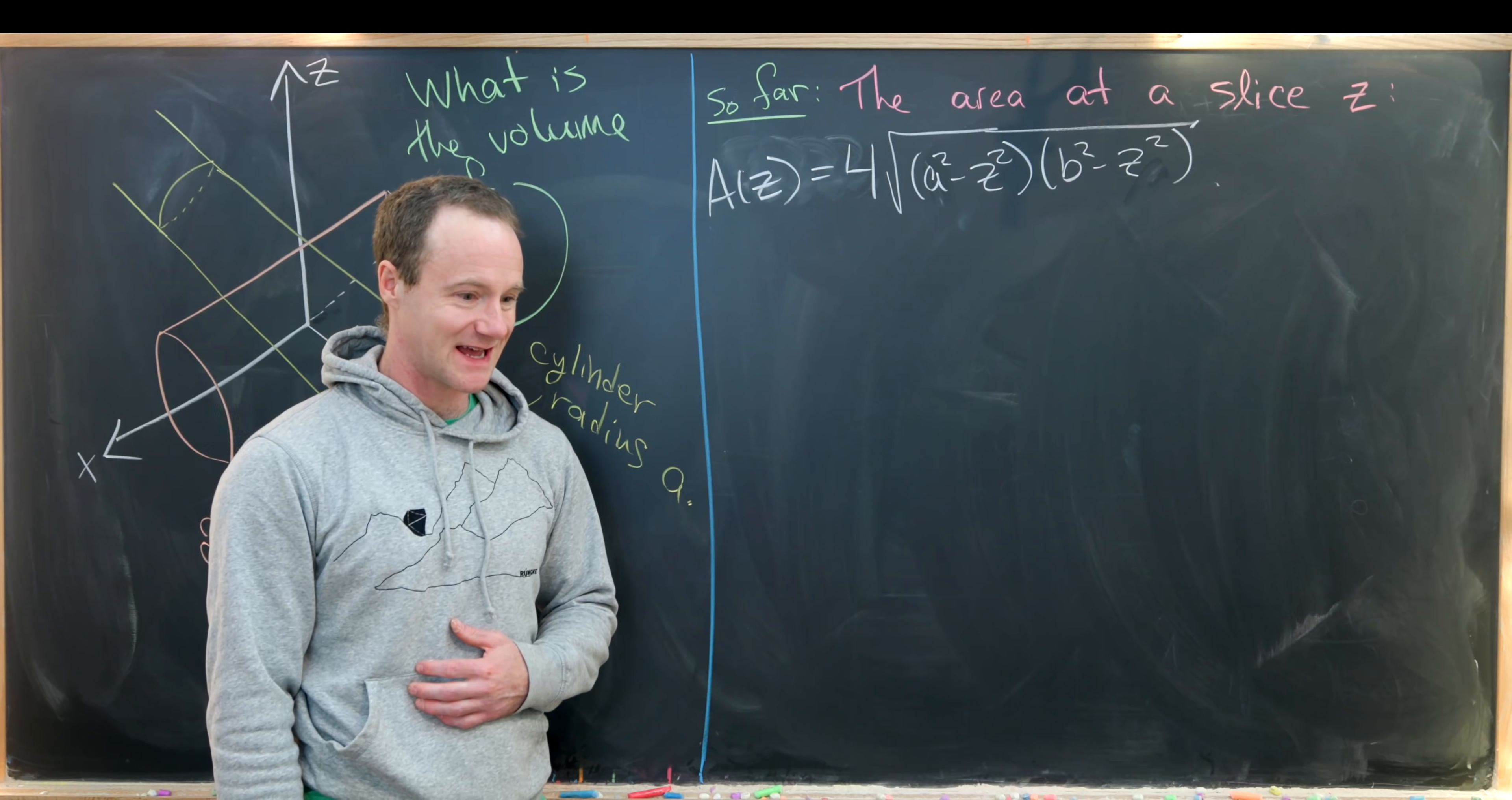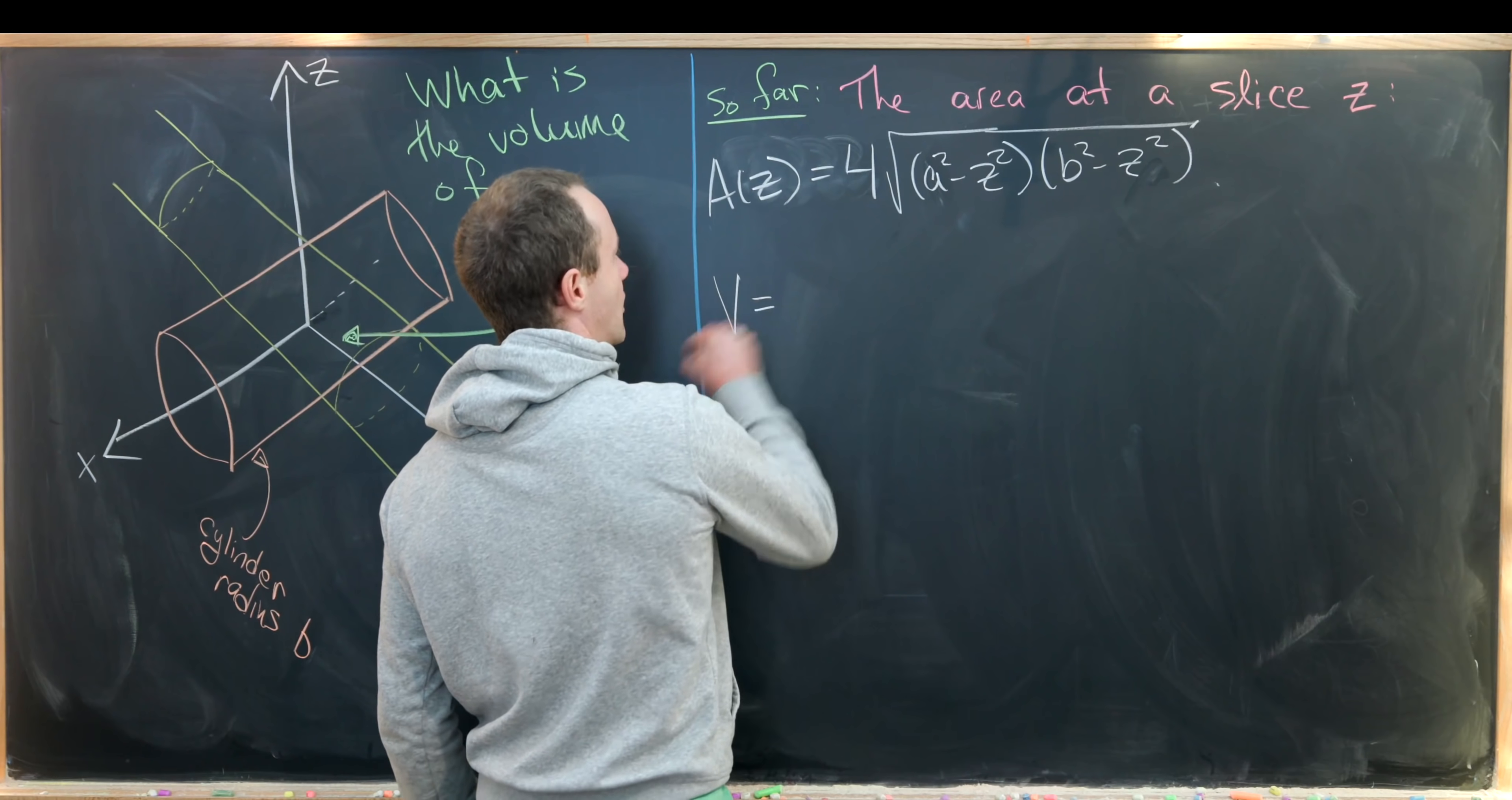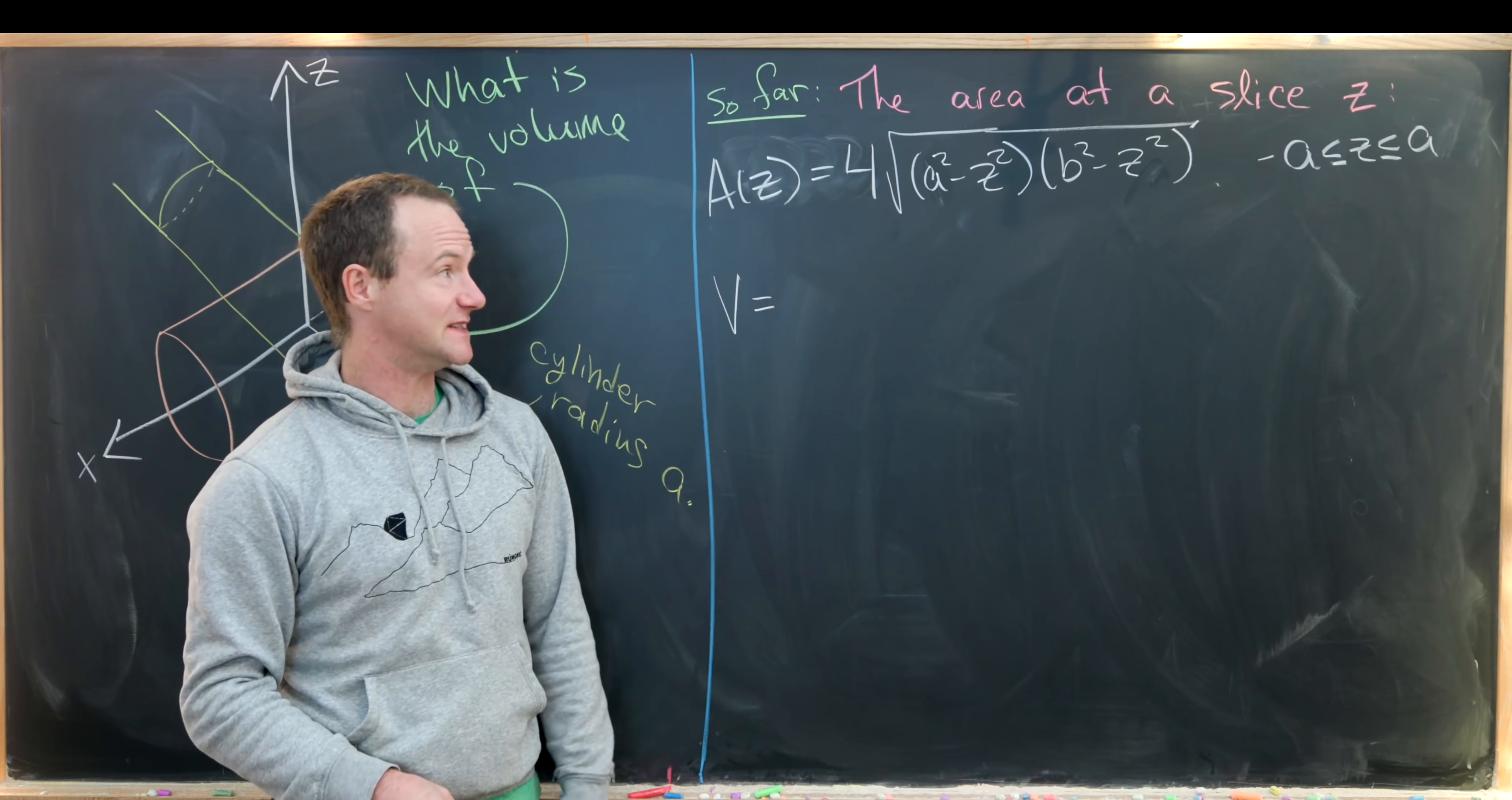On the last board, we figured out if we sliced our picture at a fixed z value, we ended up with a rectangle and we calculated that area to be 4√(a² - z²)√(b² - z²). So that means we can easily calculate our volume. Our volume will be the integral of this as z goes from negative a to positive a. But again, like we hinted at on the last board, this is an even function.